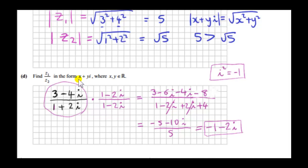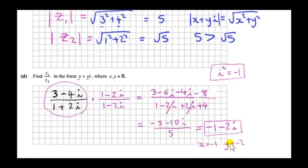If we want to write down what x and y are: x is minus 1, that's the real part, and y is the imaginary part — the coefficient is minus 2. We don't have to write down x and y separately; the answer is minus 1 minus 2i.